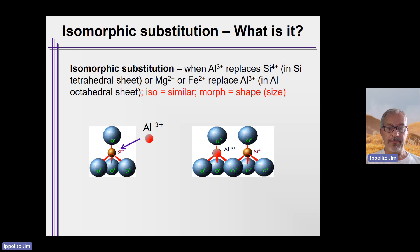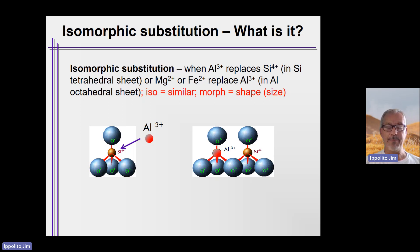This pattern repeats for one-to-one type clays, whereas two-to-one type clays have two sheets of tetrahedrons associated with one octahedral sheet, and that pattern stacks on top of one another.